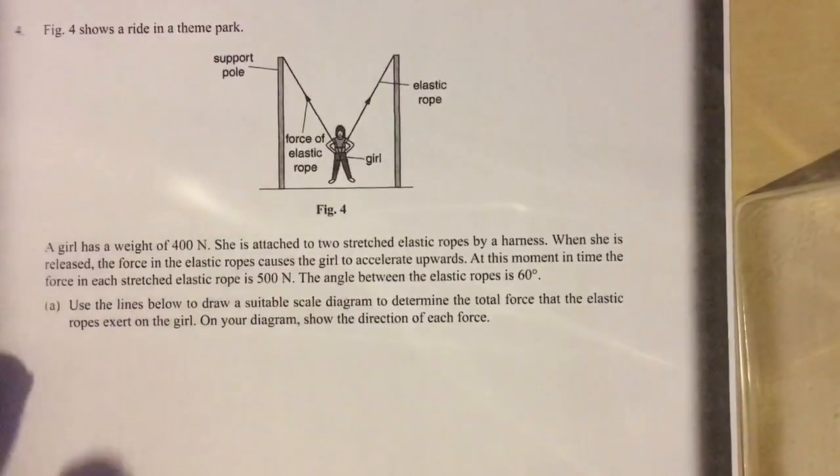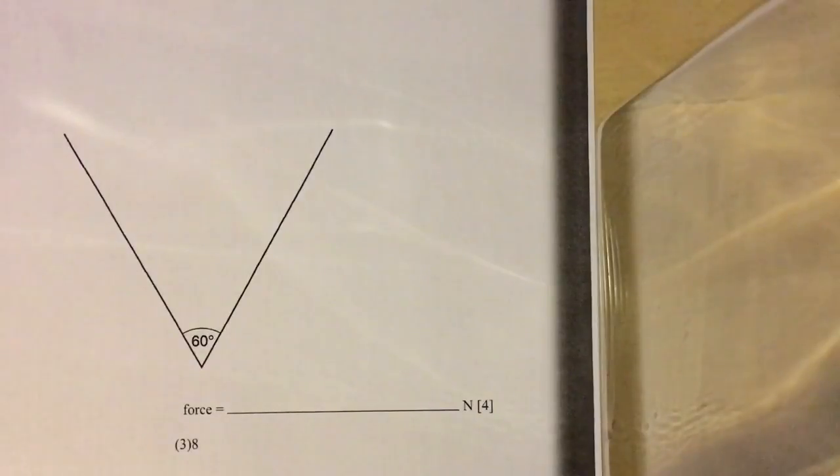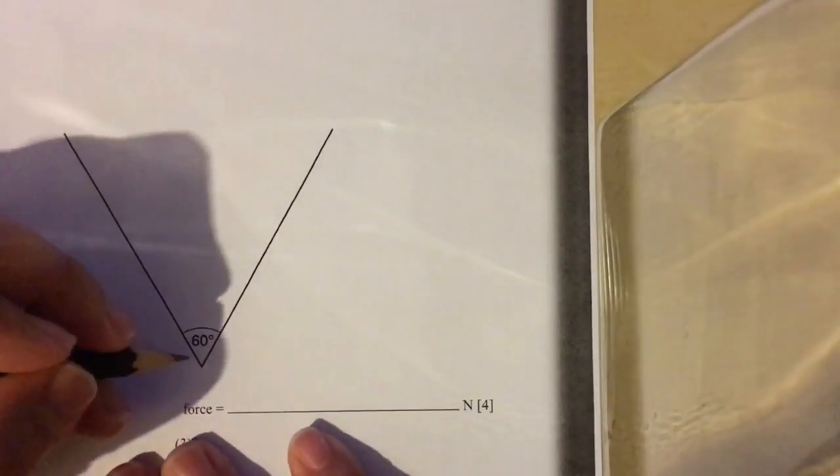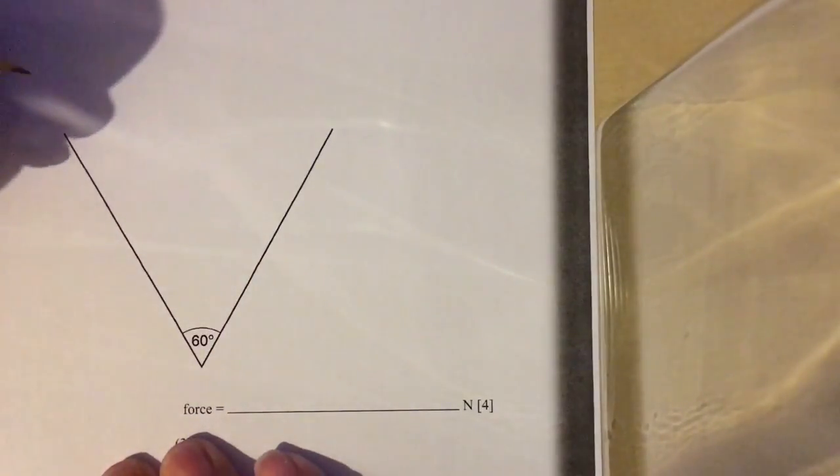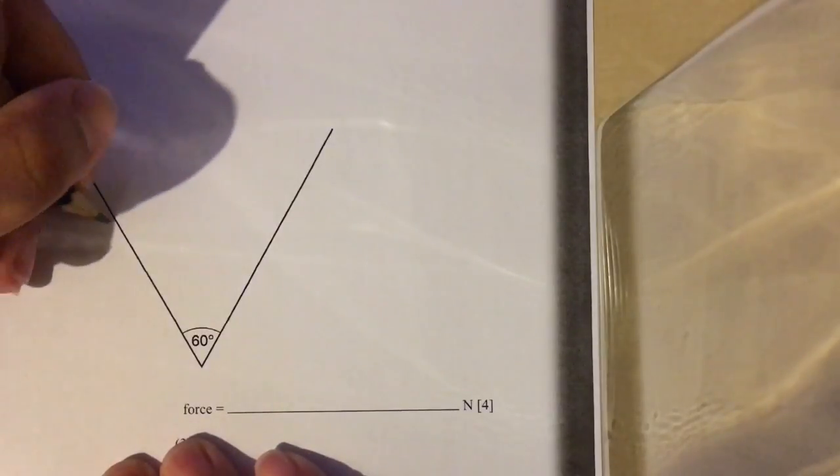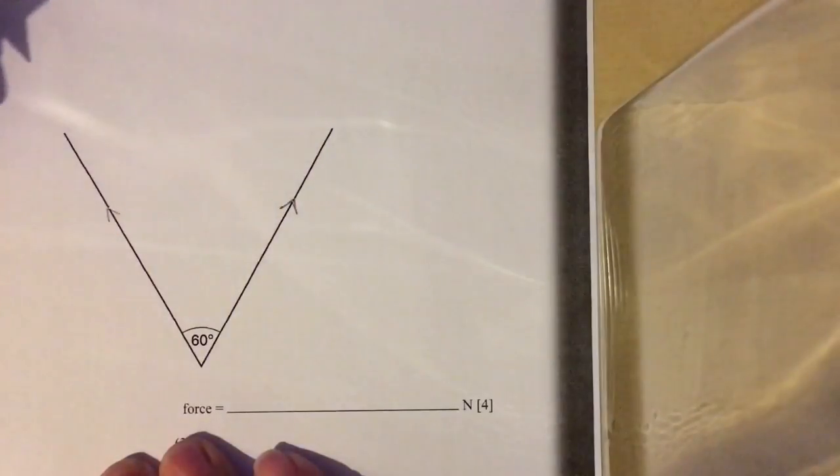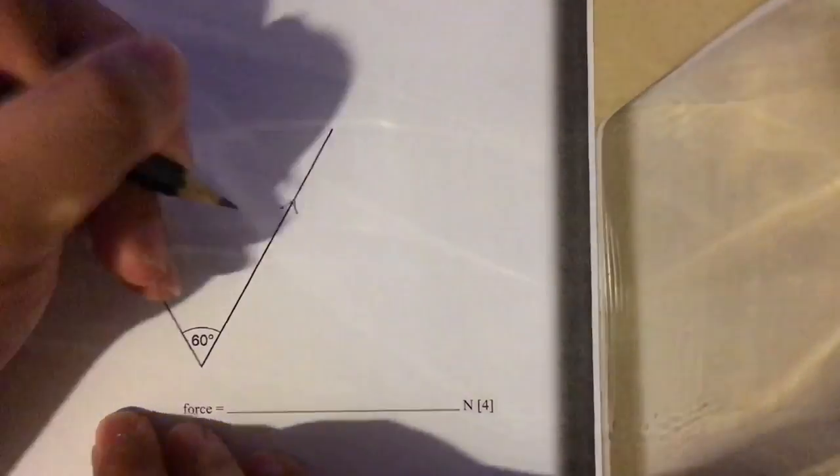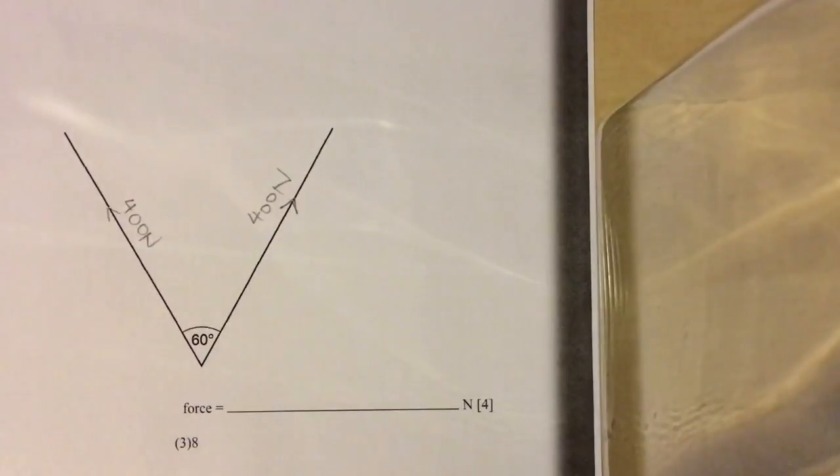Let's see how to do the vector diagram. You can see that in this question, the first part has already been drawn for you, where there is a 60 degree angle and there are two lines. This is obviously the pull of the elastic rope. The elastic rope pulls in this direction and this direction. Therefore, we draw single arrow lines to indicate their directions. And also, we can indicate the magnitude of the forces, which is 400 N for each direction.